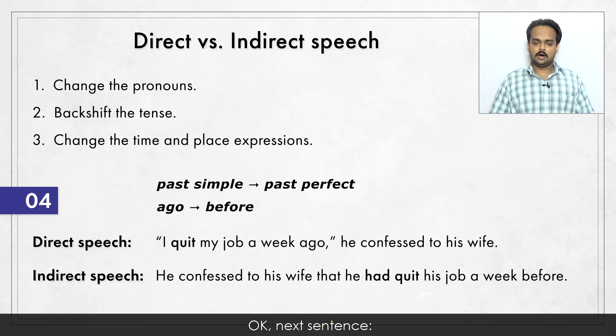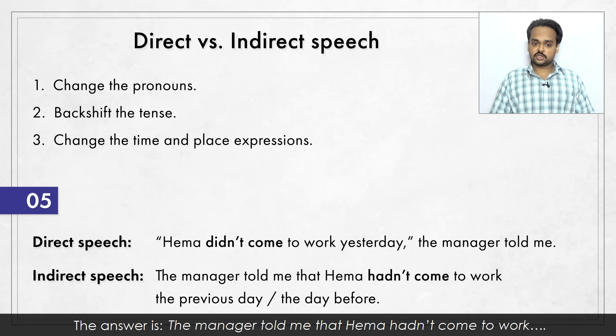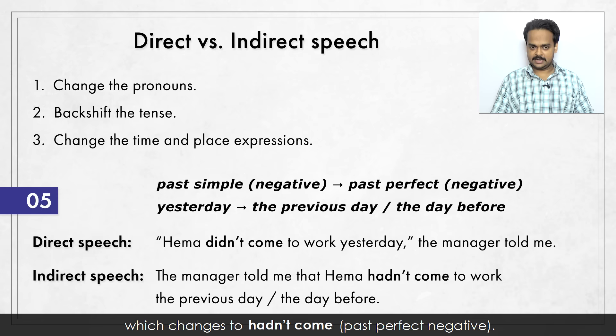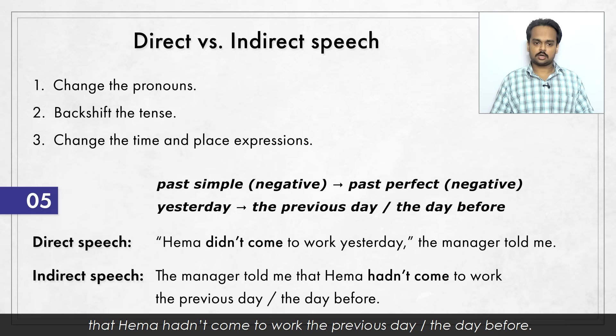Next sentence: "Hema didn't come to work yesterday," the manager told me. The answer is: the manager told me that Hema hadn't come to work. "Didn't come" is a past simple tense negative which changes to "hadn't come" – past perfect negative. Then "yesterday" becomes either "the previous day" or "the day before" – both are correct. So: the manager told me that Hema hadn't come to work the previous day or the day before.